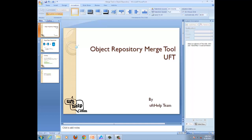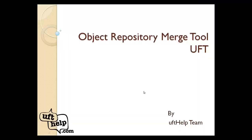Welcome team, today we are going to discuss the Object Repository Merge Tool in UFT. As the name indicates, this tool is used for merging two object repositories — one is called primary and the other is secondary. In a practical application, suppose we have module one and module two, and two different people are working on those modules, each having their own object repositories. The requirement is to merge both modules so that full-fledged automation can be there, and we need objects from both modules so the flow can be merged into one automation flow.